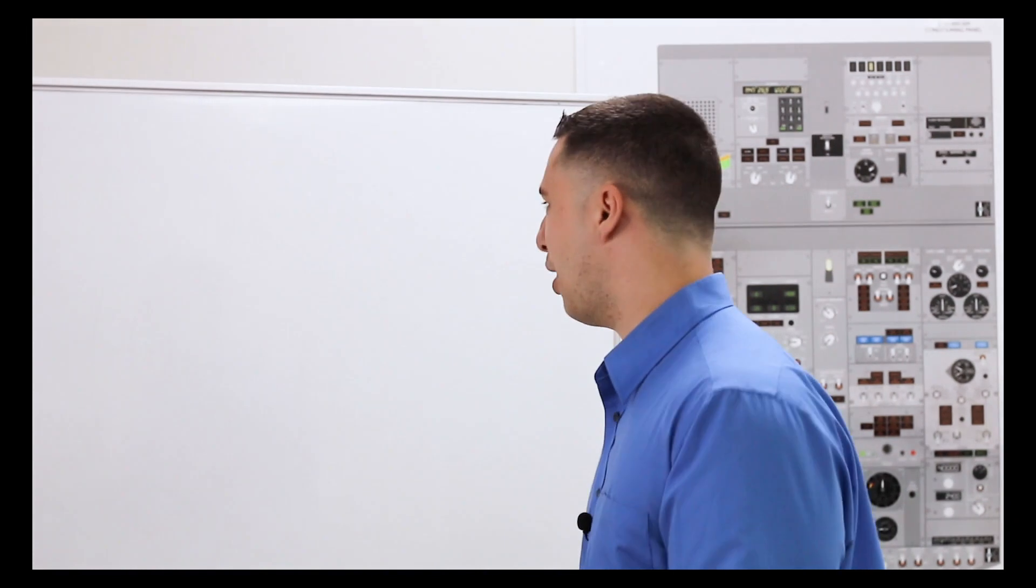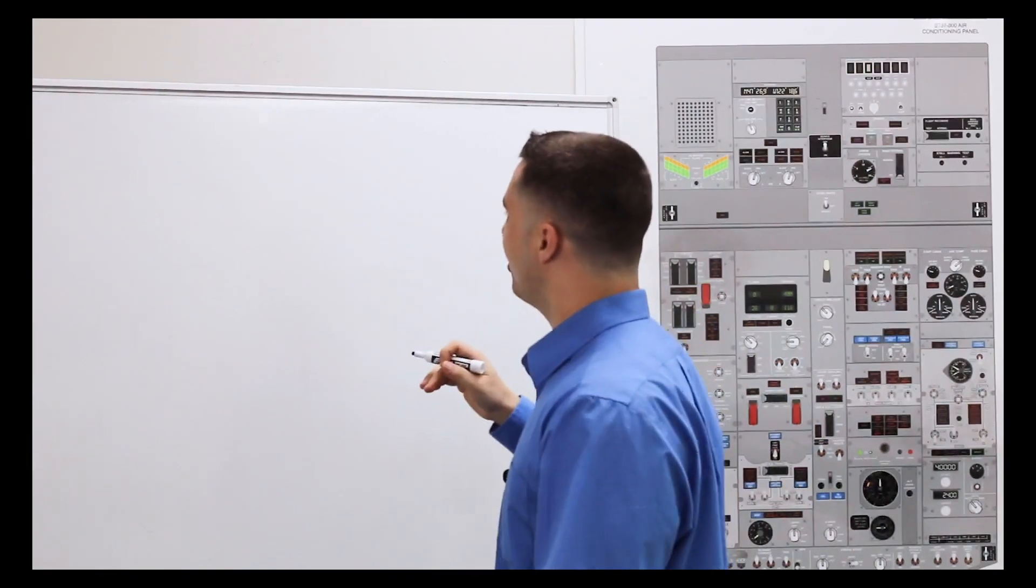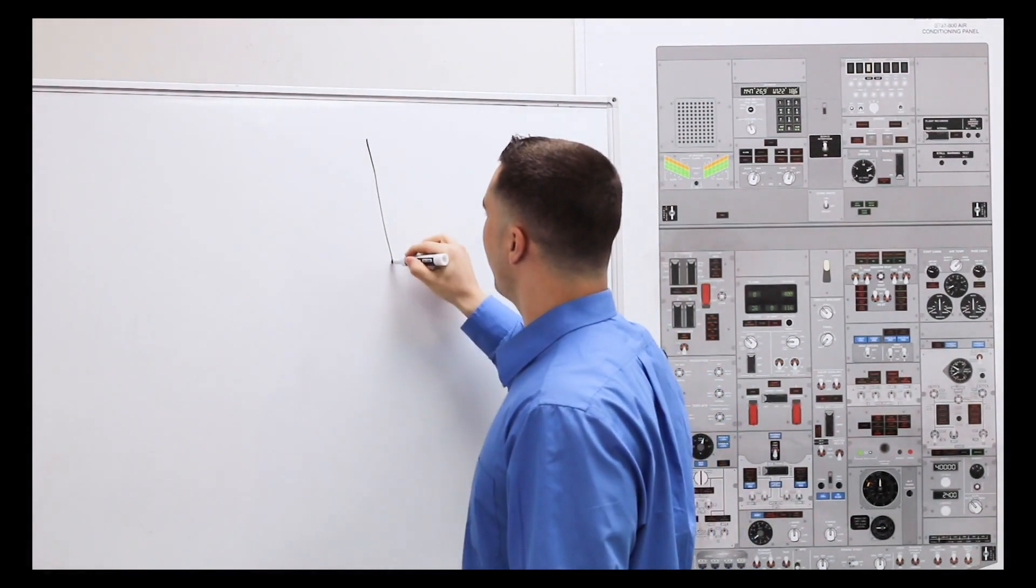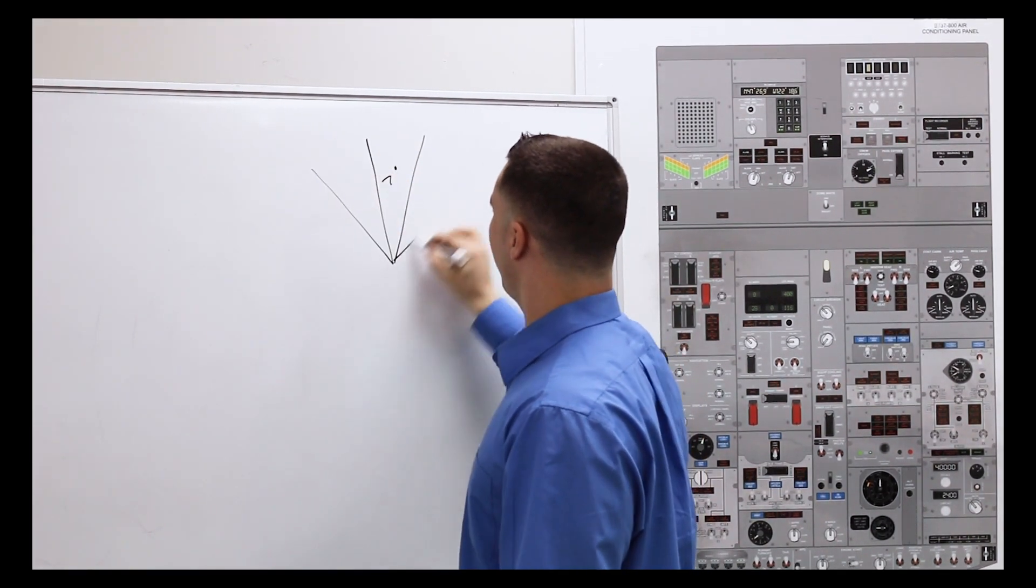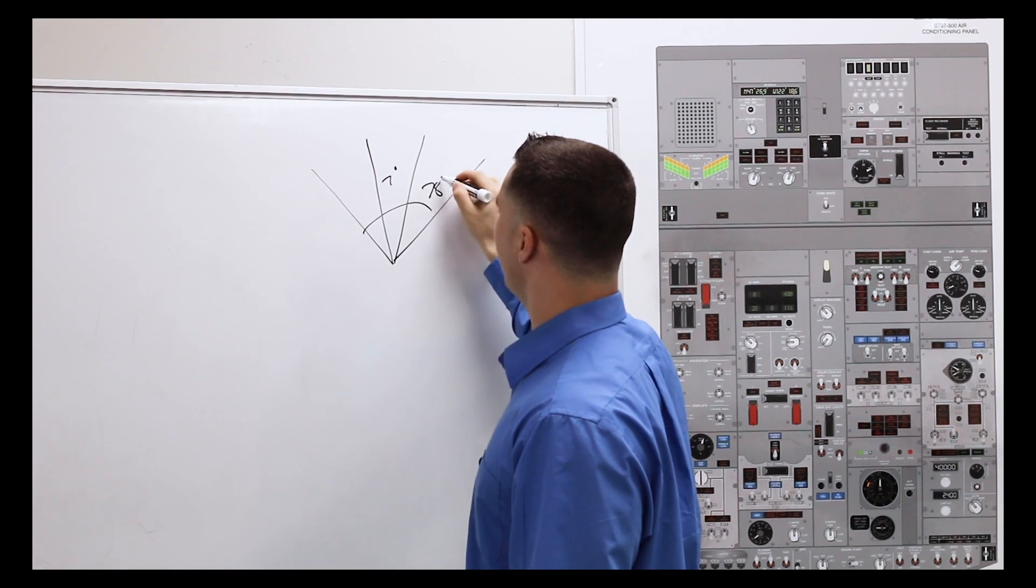Let's talk about how to taxi properly. Your rudder pedals are what we're going to utilize for a turn of no more than about seven degrees. If you need to go any further than that, into the area of about 78 degrees, you're going to be utilizing your tiller.